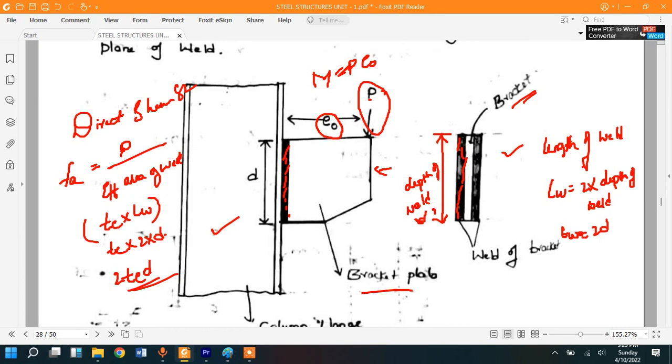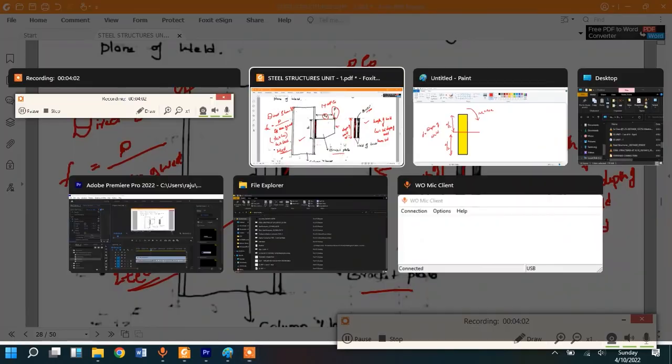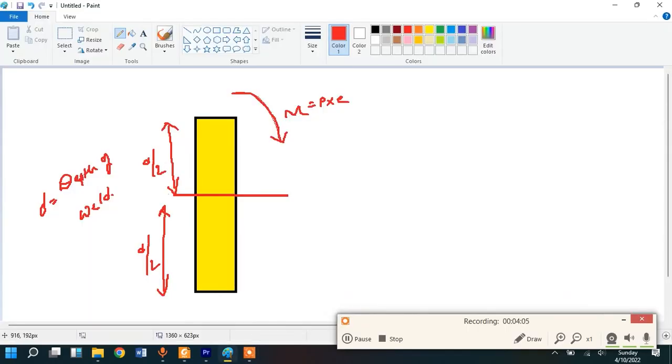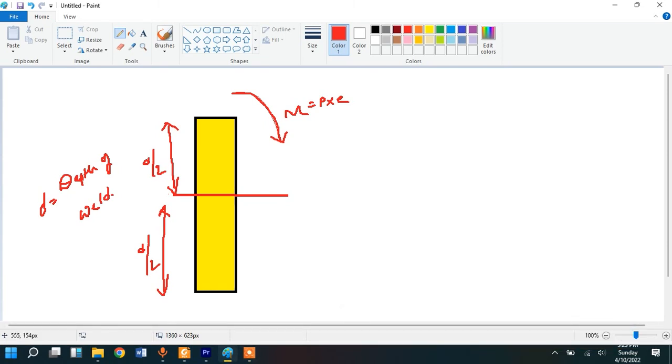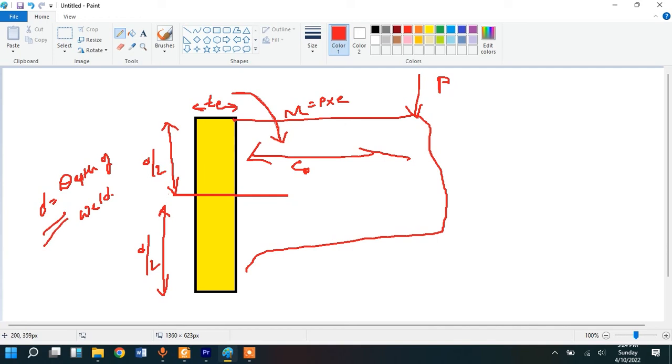The other thing is there is a moment generated because of this load, that is P into E naught. Because of this load there is going to be a stress developed. How do we calculate that? Let me help you explain this with this figure. This is the weld, this is the plate. This is the load acting P and this is the eccentricity E naught, and this is the moment at the weld. This moment has a thickness, the weld has a thickness of T throat thickness, and the length is D, the depth of the weld, and this is at the middle, the neutral axis.